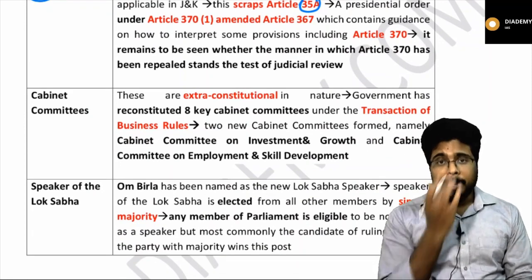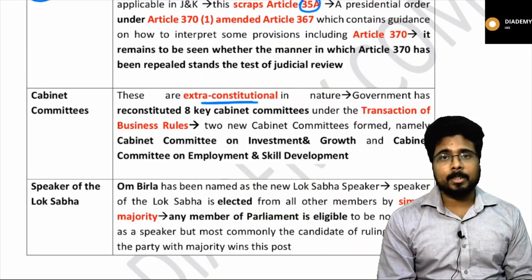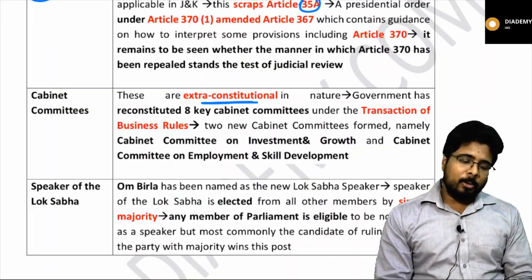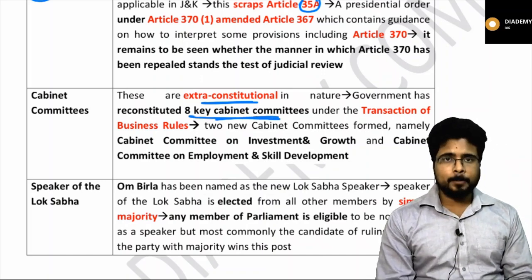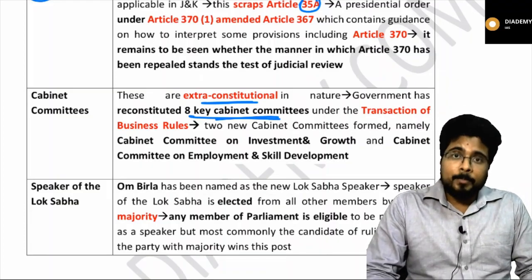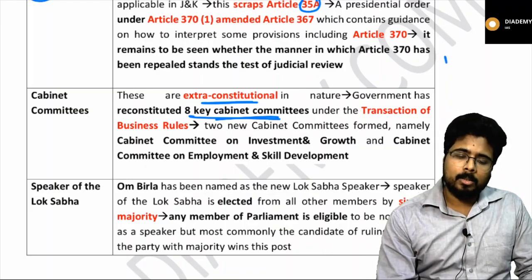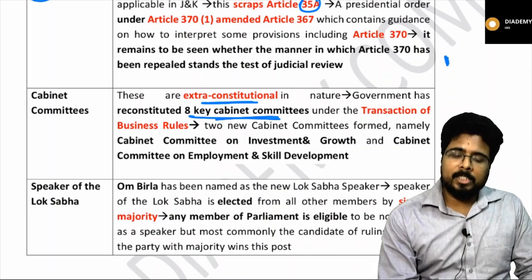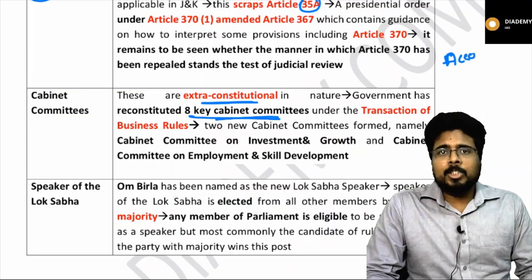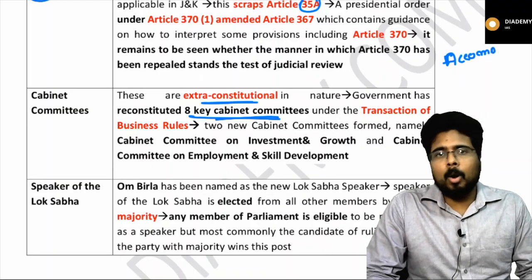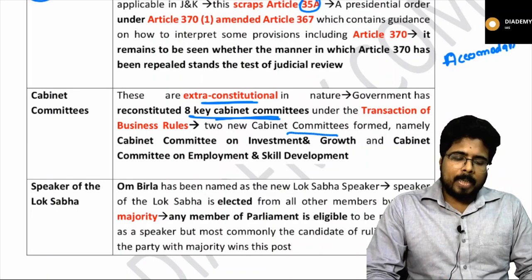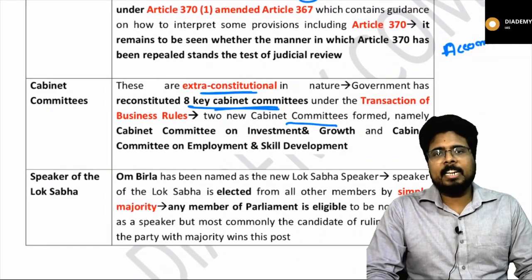Cabinet committees are extra-constitutional — that means they are not mentioned in the Constitution, which talks about the cabinet but not cabinet committees. The government reconstituted eight cabinet committees under the transaction of business rules. Generally, cabinet committees are headed by the prime minister, but the Cabinet Committee on Accommodation is headed by the home minister. This was in news because Congress leader Priyanka Gandhi Vadra was asked to vacate her government accommodation. Two cabinet committees recently constituted are the Cabinet Committee on Investment and Growth, and the Cabinet Committee on Employment and Skill Development.